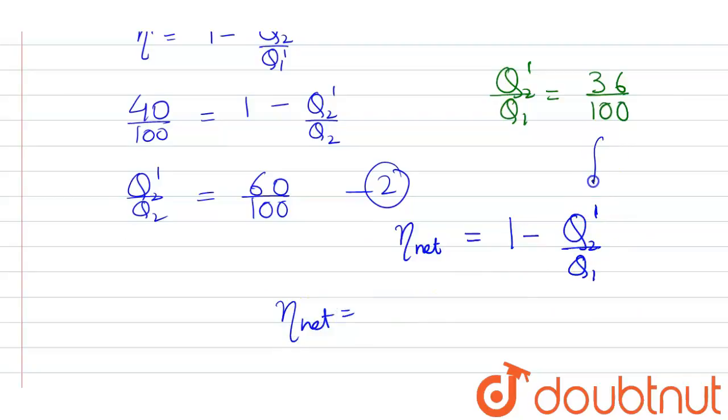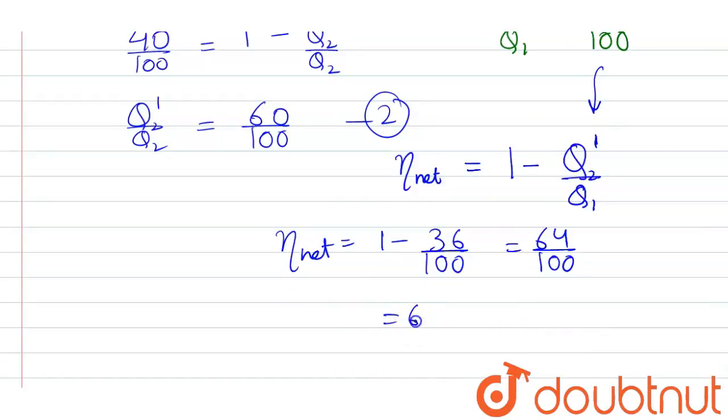And we get 1 - 36/100, so that will be 64/100, or you can say it will be 64 percent or 0.64. That means the correct option is option A.